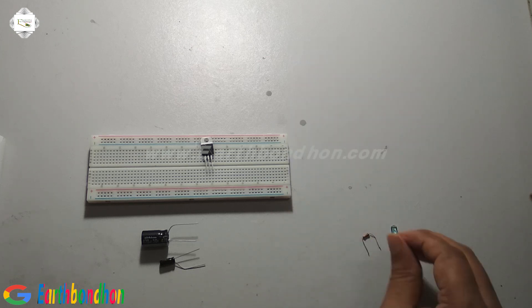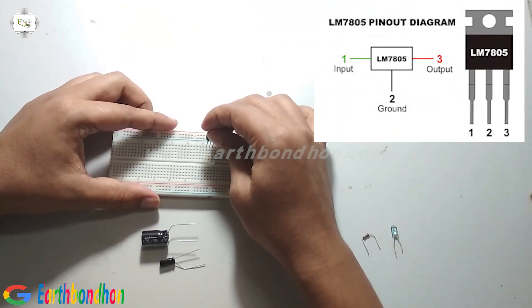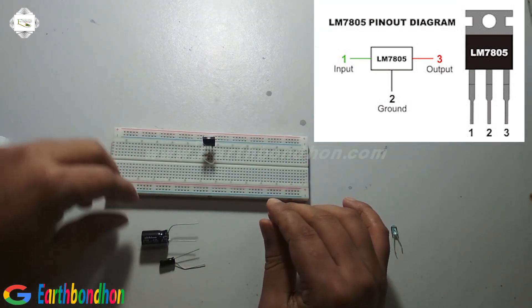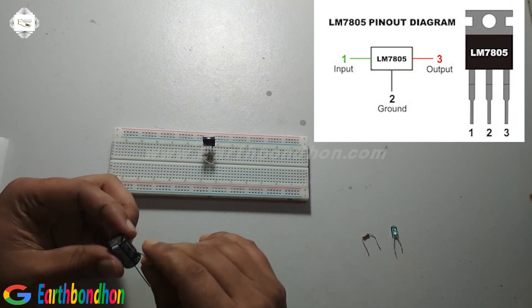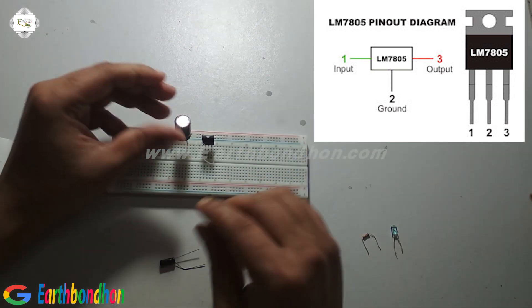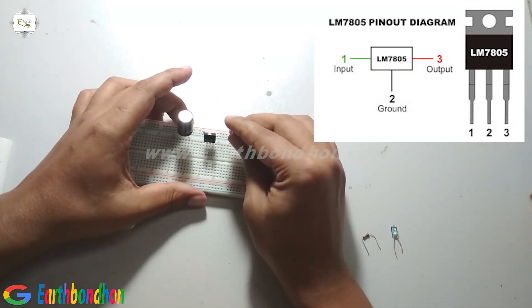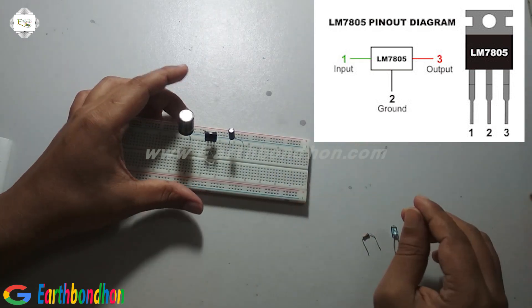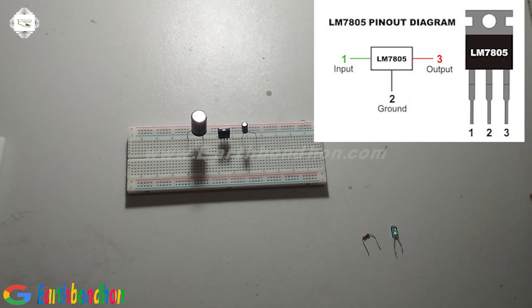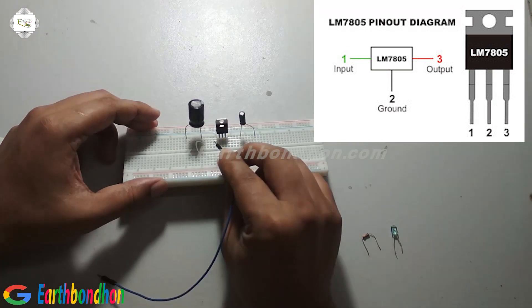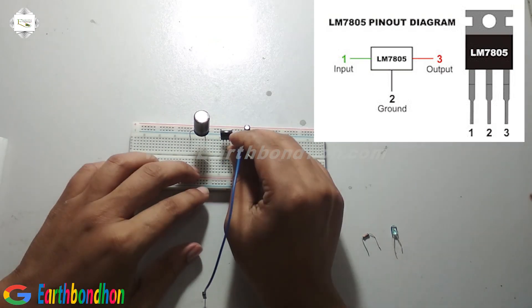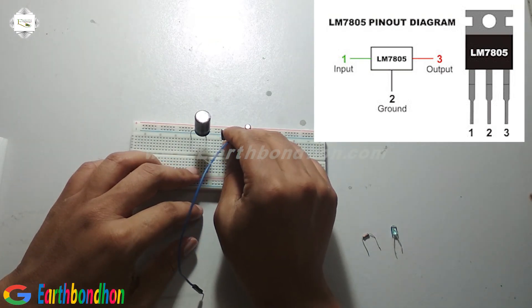First I connected the IC, capacitor number 1, and capacitor number 2. The IC pin numbers are 1, 2, and 3. The middle pin 2 is ground.